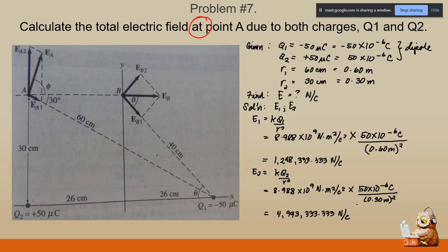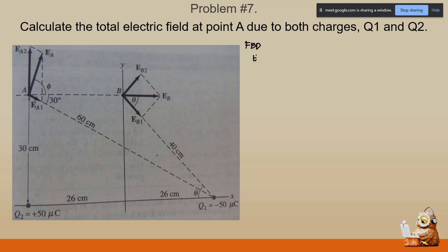For the free body diagram of E sub one: point A is at the top and q sub one — a negative charge — is at the rightmost part of the x-axis. Since we have two unlike charges, they attract each other. Due to this attractive force, the arrow at A will point towards q sub one, and the arrow at q sub one will point towards point A.